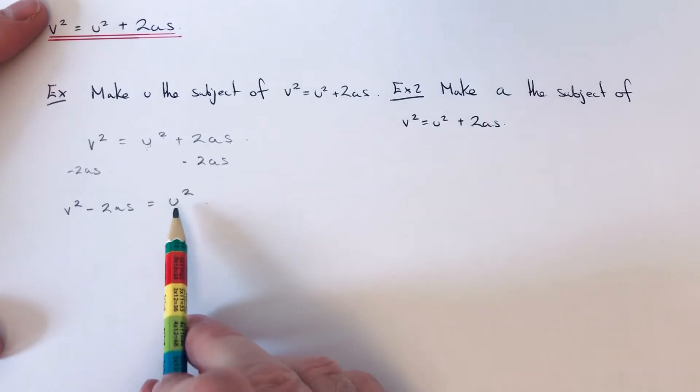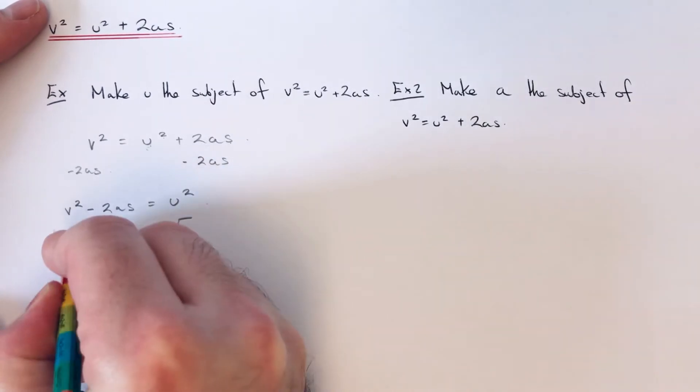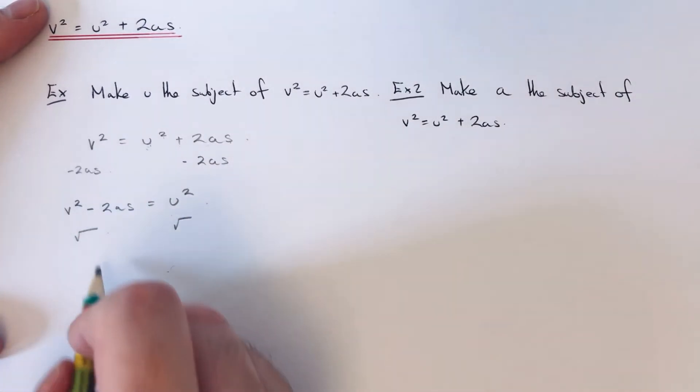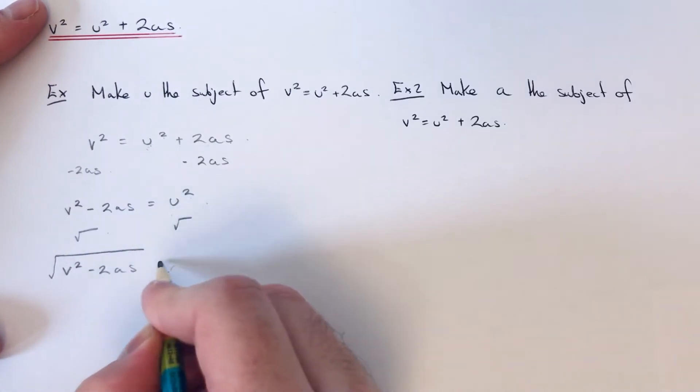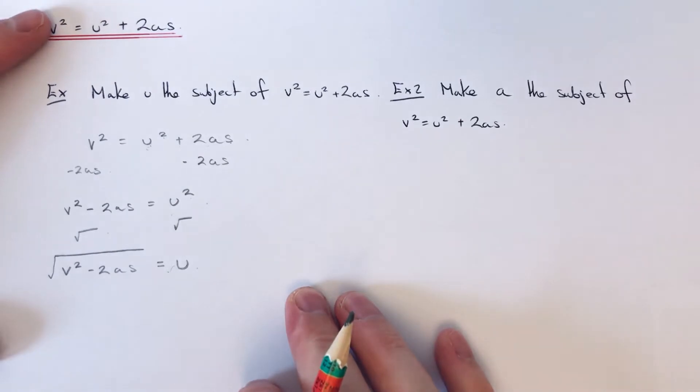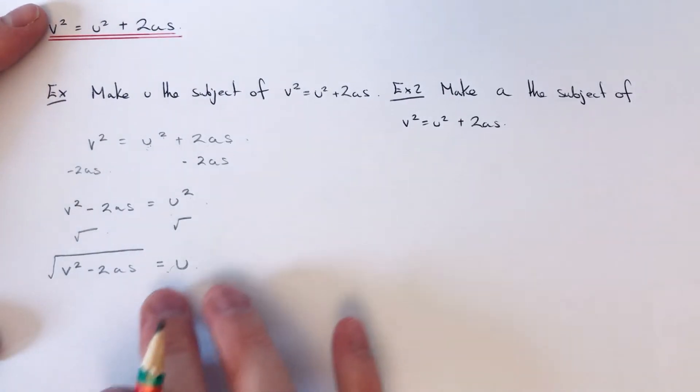We just need to do one more step now. The opposite to a square is a square root, so we just need to square root both sides. On our left side we just need to put a big square root sign and fit v² - 2as underneath, and we've now made u the subject.